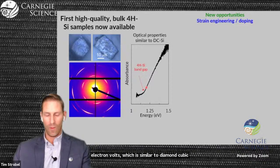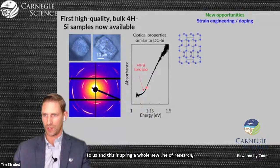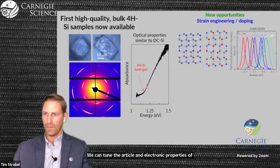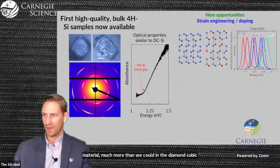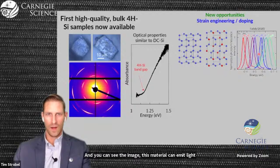However, there are many new opportunities now available to us. Under compression of the 4H structure, or tension, or by doping the structure with other atoms, for example germanium, we can tune the optical and electronic properties of the material much more than we could in the diamond cubic structure. Recently a similar material was produced with silicon and germanium, and you can see this material can emit light at various wavelengths.